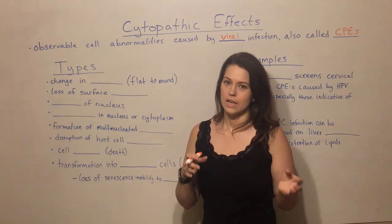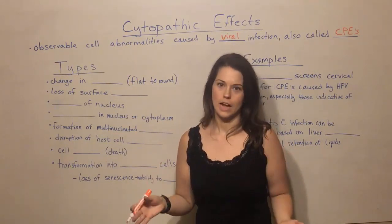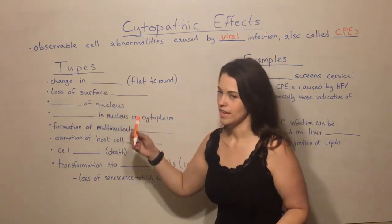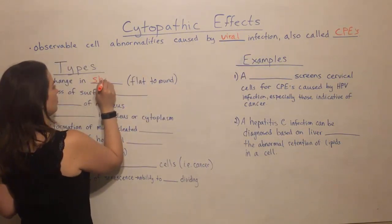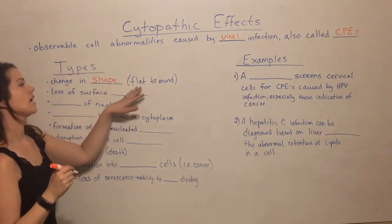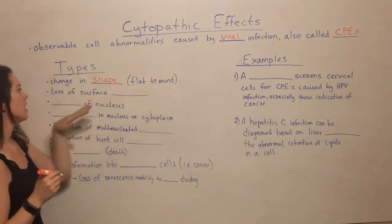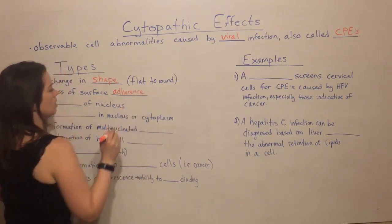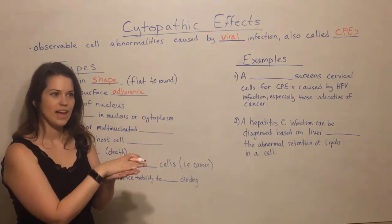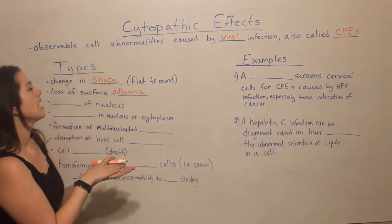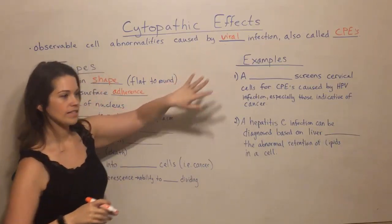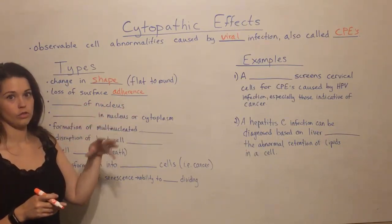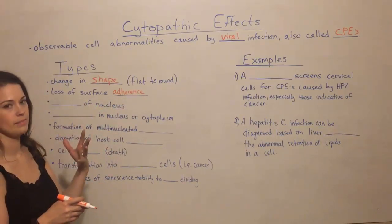Different viruses infecting different cell types will cause different kinds of cytopathic effects, but some of the ones doctors look for include a change in cellular shape — especially cells that should be flat becoming more rounded. Another is loss of surface adherence, where cells that normally grow attached to a substrate stop adhering to a surface and just start floating in the medium.